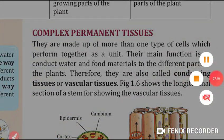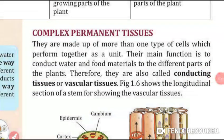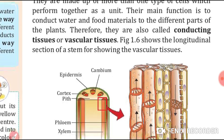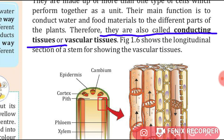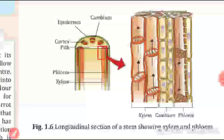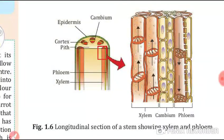Now we will learn about complex permanent tissue. Complex permanent tissues are made up of more than one type of cells which perform together as a unit. Their main function is to conduct water and food material to different parts of the plant, which is why they are also called conducting tissues or vascular tissues. Here is a diagram showing the longitudinal section of a stem with xylem and phloem.